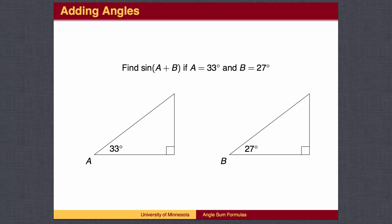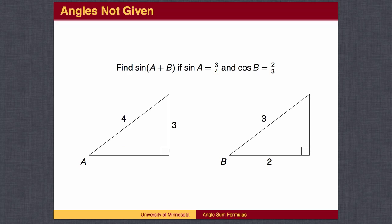Before we work some problems, let's ask whether or not we need these formulas at all. Could we compute sine of A plus B directly? In order to do so, you would need to know angle A and angle B so that you could add the angles. Maybe you are given information about the angles — in this case the two angles add to 60 degrees, and we could find the sine of 60 degrees from the unit circle. But you may also be given the sine, cosine, or tangent of the two angles, and then you would have to use inverse trig functions to find the angles before you could add. The formulas give us a much more direct way to get the answer.